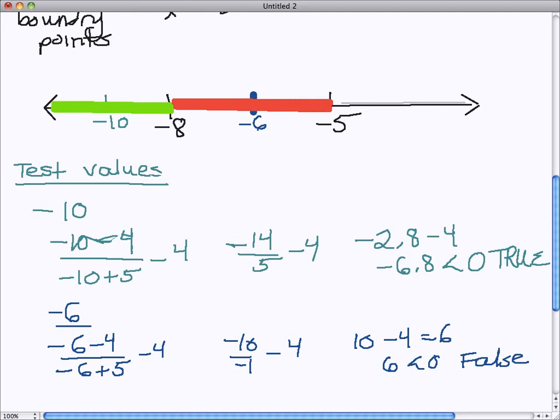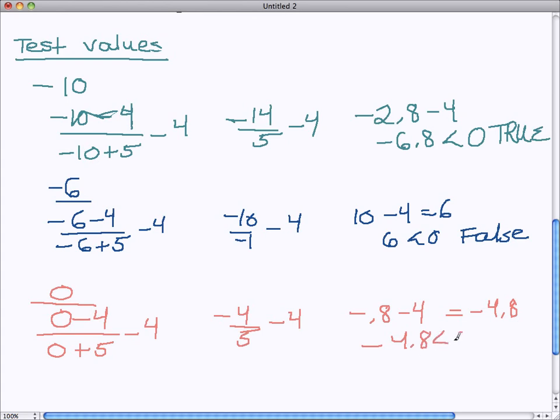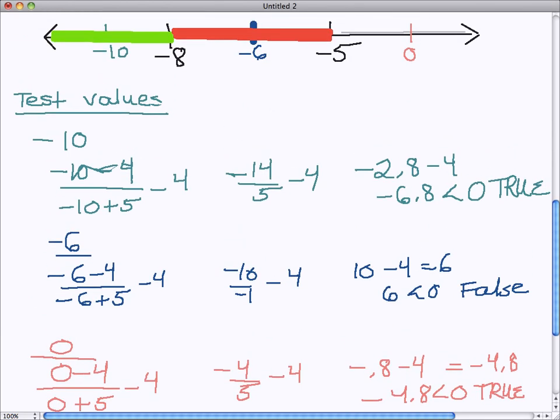And then last we're going to try a value from the upper region, or the right of negative 5. And I'm going to try out 0. So I'll put 0 in my equation for x, and get negative 4/5 minus 4, or negative 0.8 minus 4, which gives me negative 4.8. Since negative 4.8 is indeed less than 0, and that is a true statement, that is my green region also. That is a good region that's going to be a solution to my inequality.